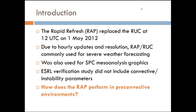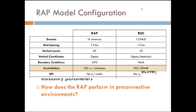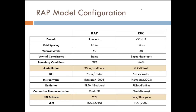They had temperature and dewpoint on there, so you can kind of start to get an idea of what the CAPE profiles would look like. But unfortunately, the part that they released didn't cover the convective season. So there was a question in our minds: how is that going to perform in pre-convective environments, especially since it came out right before the convective season and completely replaced the RUC?